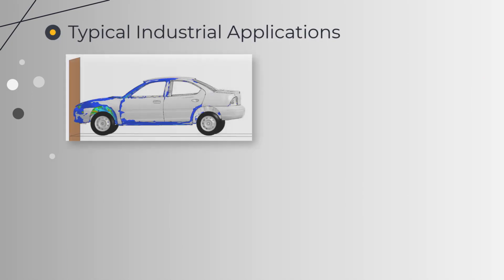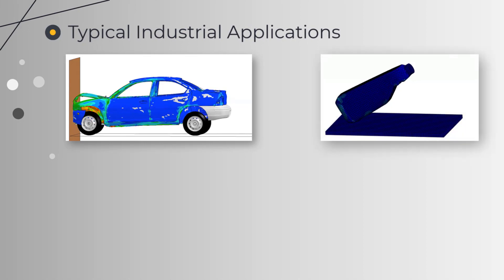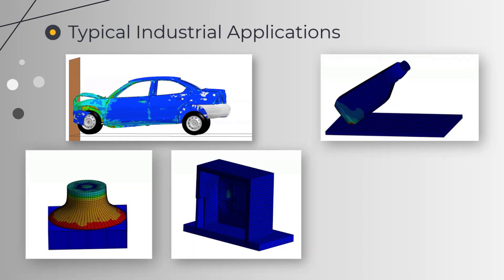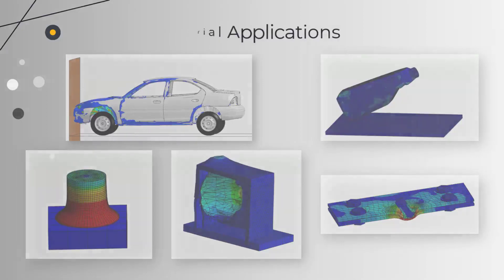The typical industrial applications of the explicit method are car crash simulation, drop test, Taylor impact, detonation or explosion, ballistics, etc. I hope you have found this video informative. Thank you for watching and do check out our other courses to discover more useful learning resources.